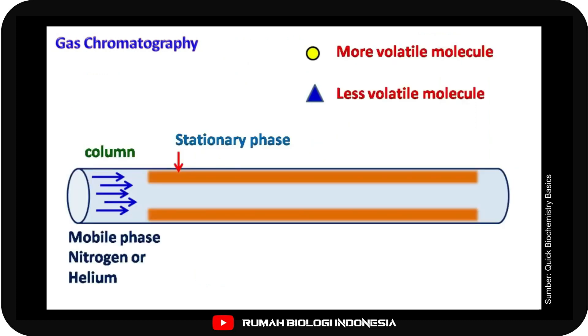Separation occurs based on the interaction of molecules between the mobile phase and the stationary phase. The less volatile molecules interact more with the stationary phase and move slowly, while the more volatile molecules interact more with the mobile phase and move fast down the column.